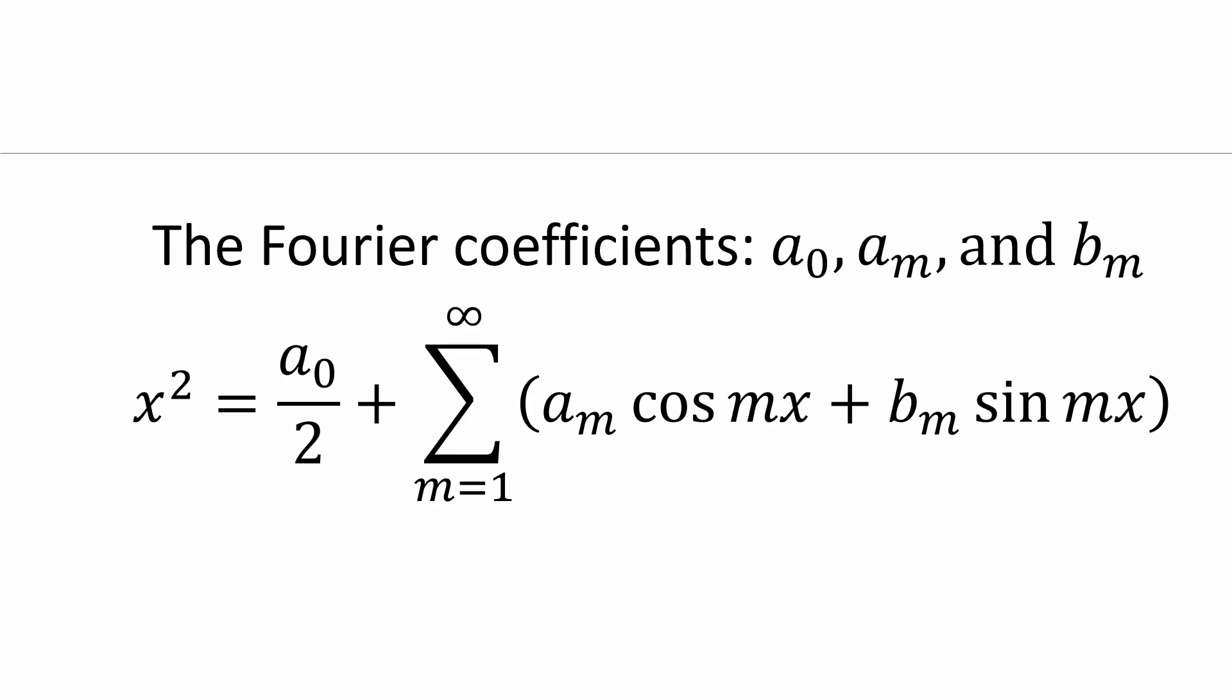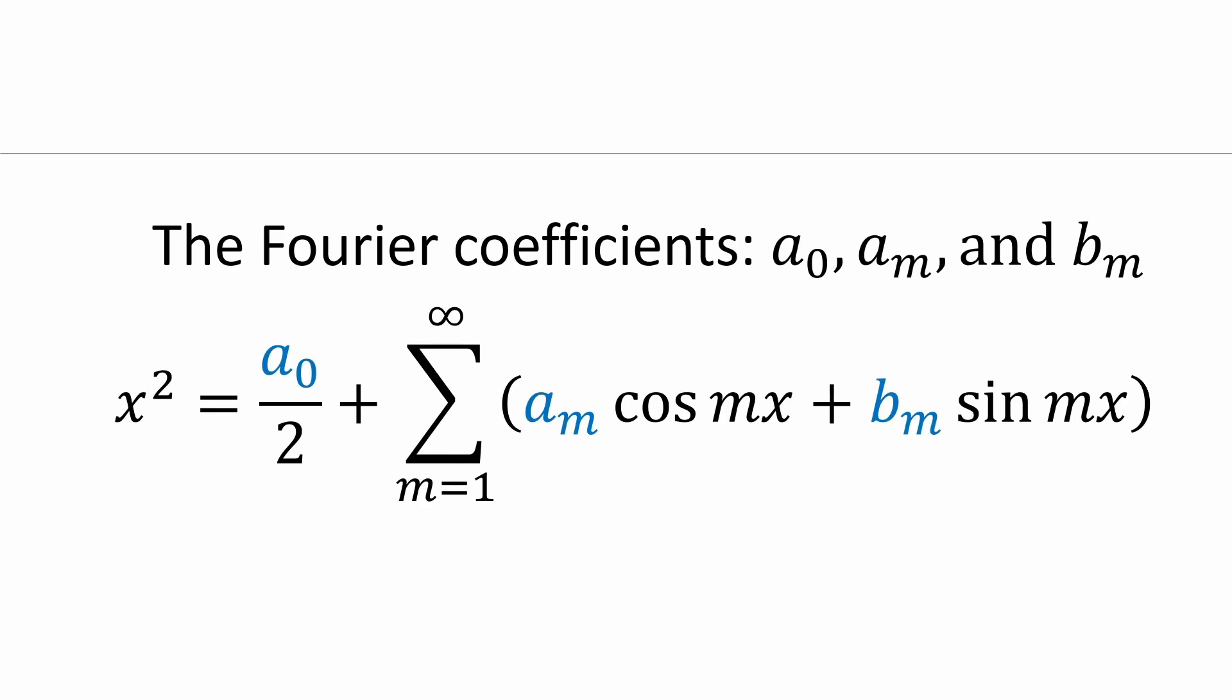Now that we know the general form of the Fourier series and the specific function we want to analyze, x squared, our next task is to determine the Fourier coefficients, namely a₀, aₘ, and bₘ, which I've highlighted in blue. From this point forward, I'm just going to call them a₀, aₘ, and bₘ. Let's write their formulas at the top.